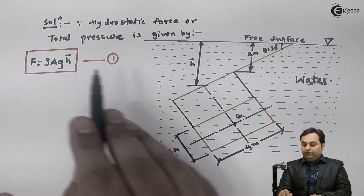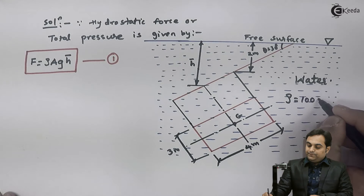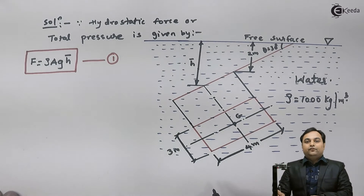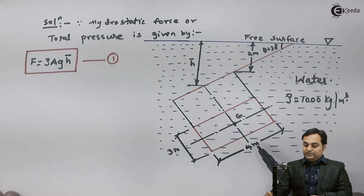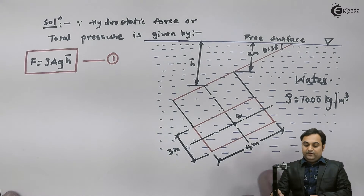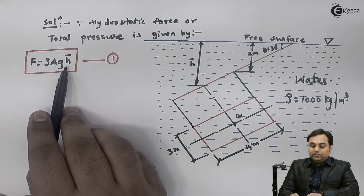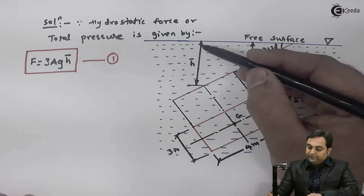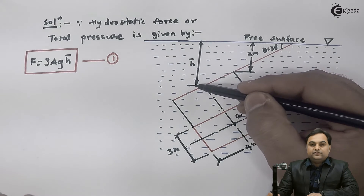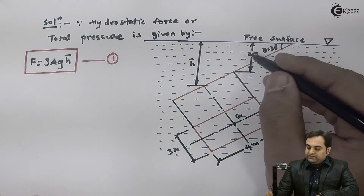The density of water is rho = 1000 kg/m³ (standard value). Area of the element we can calculate as 3 × 4, and g = 9.81 m/s². h_bar is the only value we do not have, so we need to calculate the distance of the centroid of this rectangular plate from the free surface.